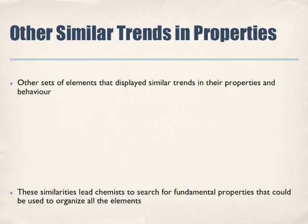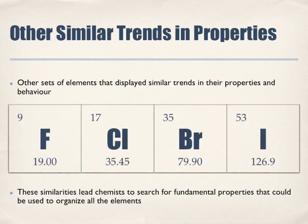Other similar trends in properties are involved here with the following set of elements that display similar trends in their properties and behavior. Here are the following: Fluorine, Chlorine, Bromine, Iodine. What are these? These are the halogens.